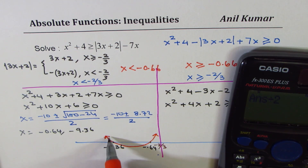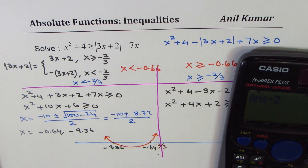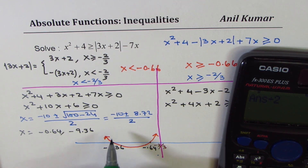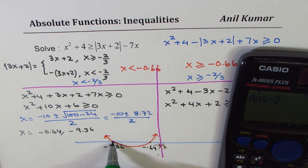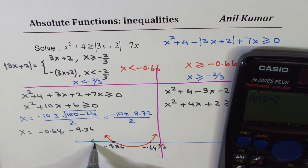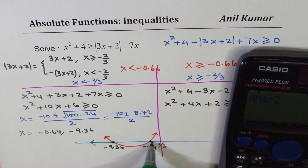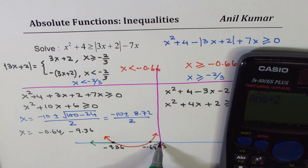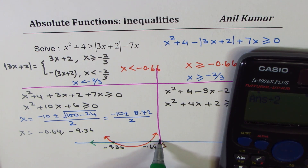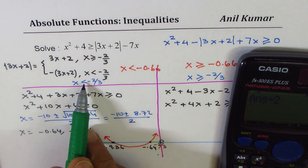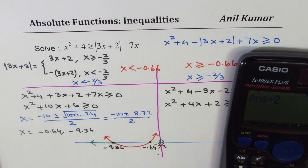Since the coefficient is positive, the parabola opens upward. The expression is greater than or equal to zero outside the roots — so the solution for this interval includes x ≤ −9.36 or x ≥ −0.64. However, since we are restricted to x < −2/3, we only take the portion within that domain.